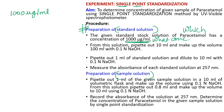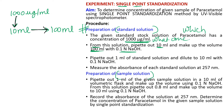From the 1000 microgram per ml standard stock solution, pipette out 10 ml and make up the volume to 100 ml using 0.1 N NaOH as the solvent. As explained before, a vertical arrow represents withdrawing and a horizontal arrow represents making up the volume. This gives the first dilution — solution A. Then from solution A, pipette out 1 ml.